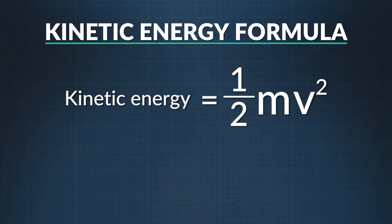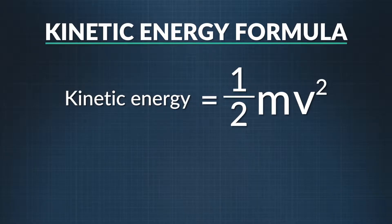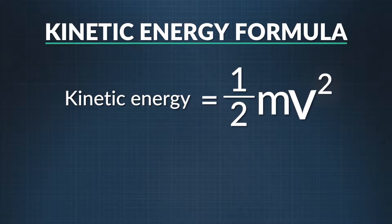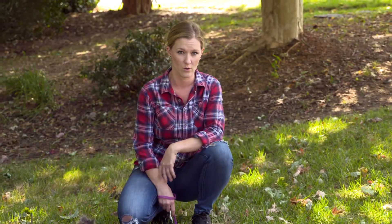Kinetic energy is the energy of movement, so we would expect that velocity is involved. Kinetic energy is equal to one-half the moving mass times its velocity squared. Kinetic energy is a scalar quantity, meaning it is not associated with direction. It can, however, be positive or negative, depending on whether that energy is being added to a system or taken away.